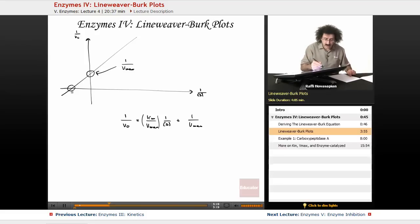Where it hits the X-axis here, this is equal to minus 1 over Km. And the slope, the slope of this equation is equal to Km over Vmax.